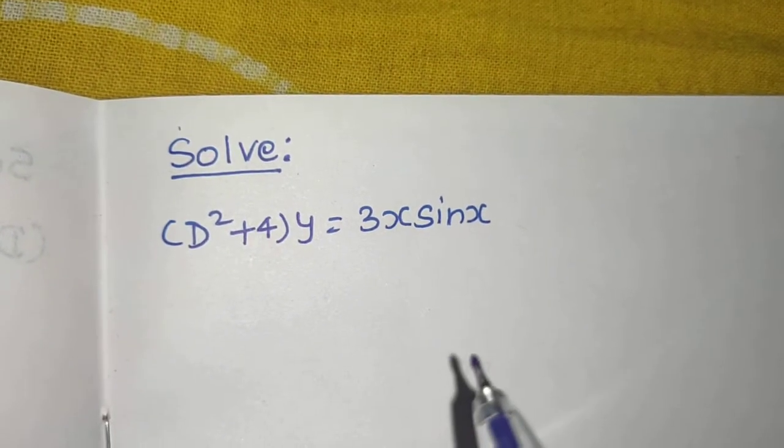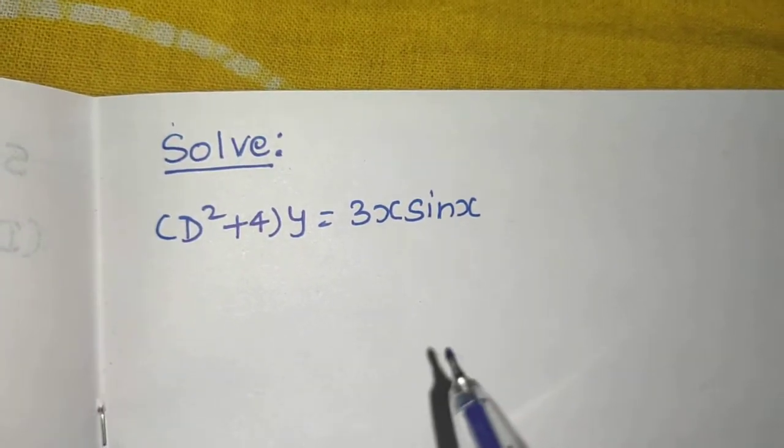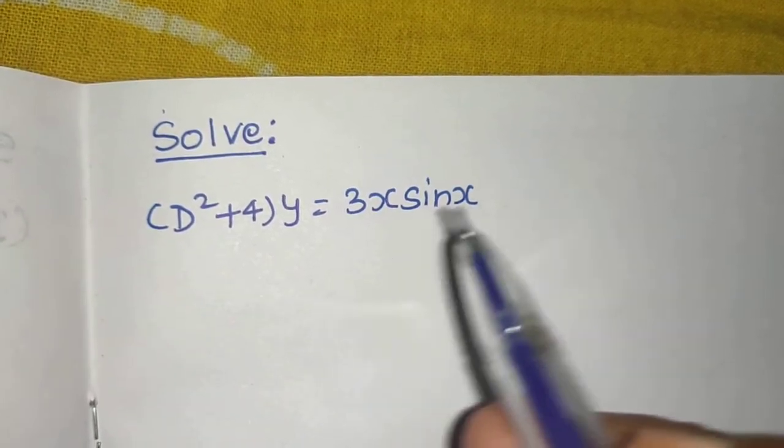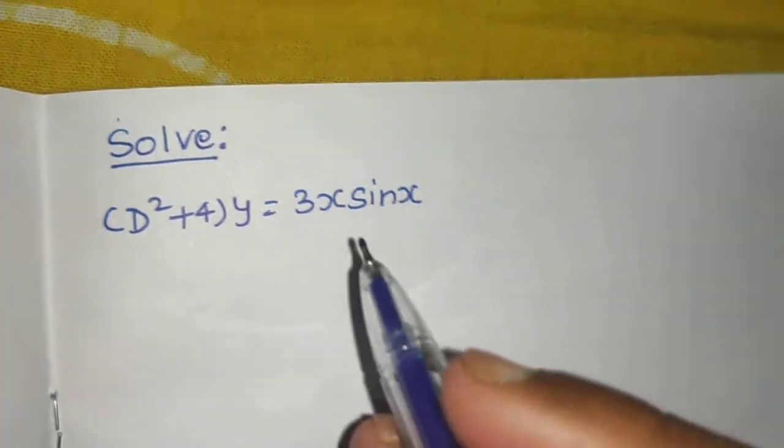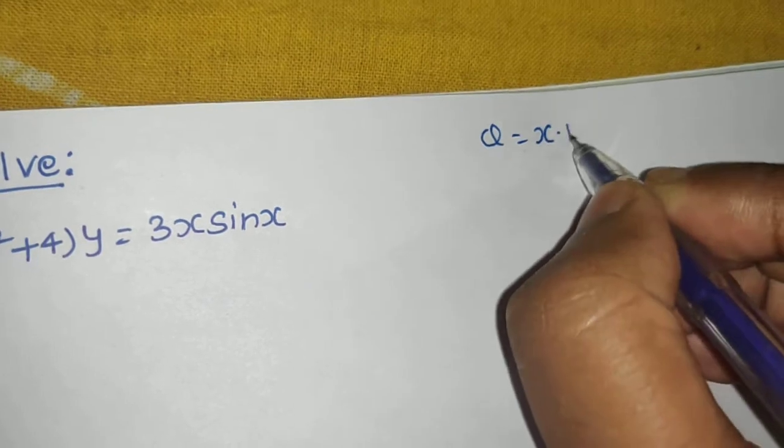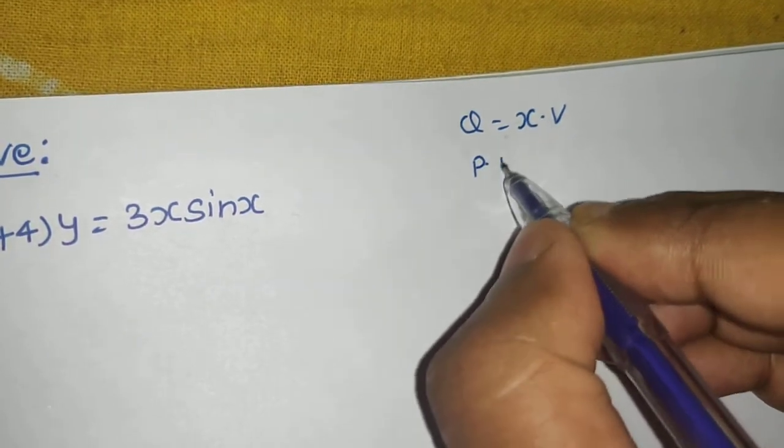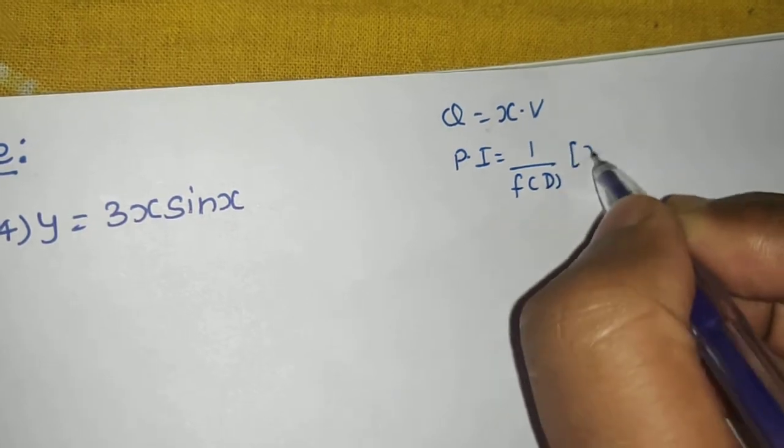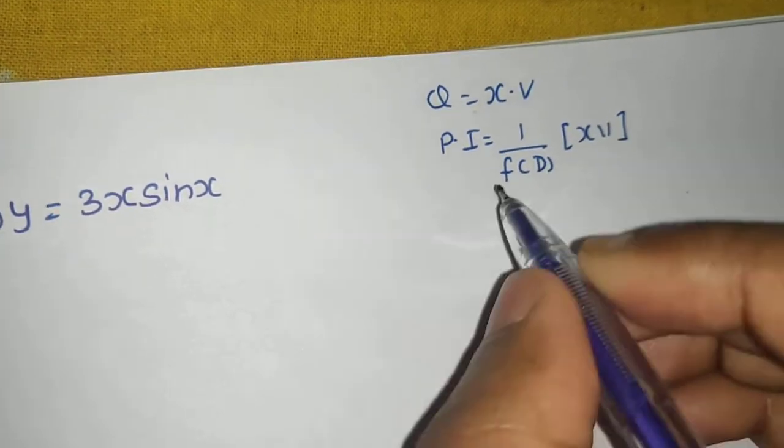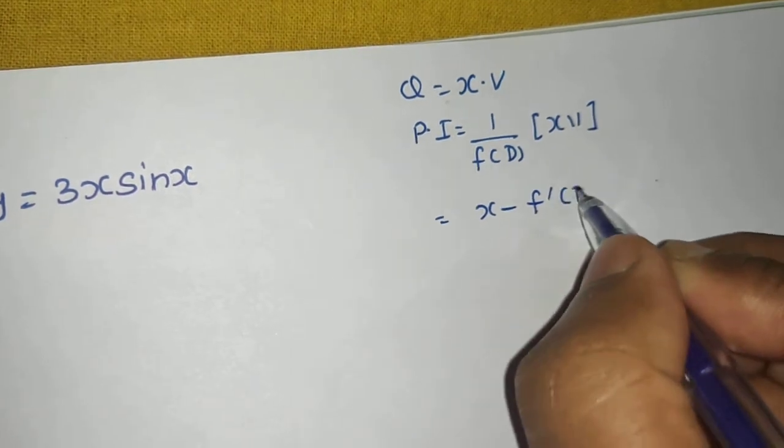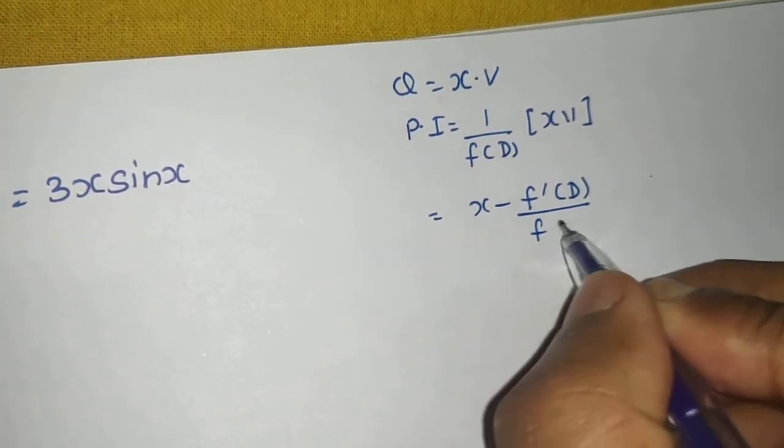That rule: if something is of the form x into v. Let's recall that if the RHS is of this form, then particular integral is 1 upon f of D operating on RHS. So we write it like this: x minus derivative of this divided by f of D.